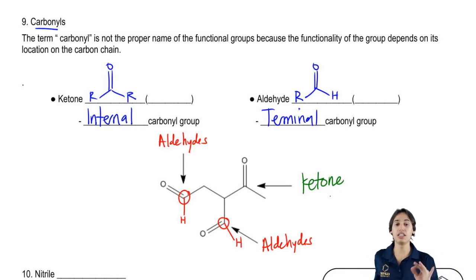Now notice that these are only ketones and aldehydes because they don't have other types of atoms next to them. If they had an oxygen or if they had a nitrogen, then they would become the other functional groups that we talked about like amides and stuff like that.